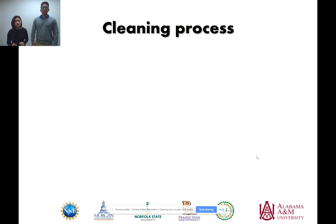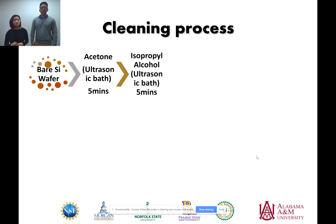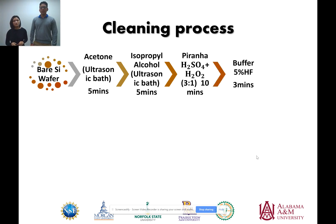We begin the cleaning process with a pair of silicon wafers, then submerge them in acetone inside a petri dish, which is placed in an ultrasonic bath for five minutes. We then continue with isopropyl alcohol, also in the ultrasonic bath for five minutes. To remove impurities, we use a piranha solution composed of 98% sulfuric acid and 0.15 molarity hydrogen peroxide in a 3:1 ratio, submerging the wafers for 10 minutes. Finally, we submerge the silicon wafers in a buffer solution of 5% hydrofluoric acid for three minutes, obtaining clean wafers.